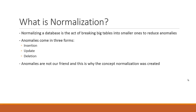So let's get right into it. What is normalization? Well, normalizing a database is actually the act of breaking big tables into smaller ones to reduce anomalies. What I mean by a big table is a table that has lots and lots of columns in it — lots of different data types, et cetera. It's a process of taking that big table and breaking it down into smaller ones based on a set of rules. Breaking big tables into smaller ones is normalization. The point of it is to reduce anomalies.